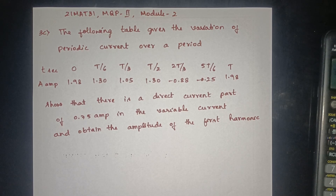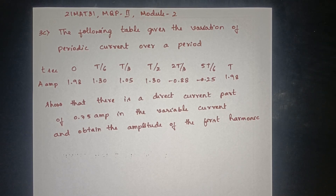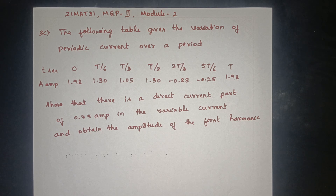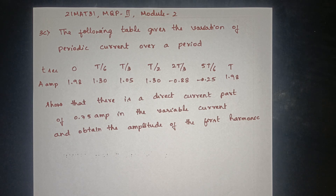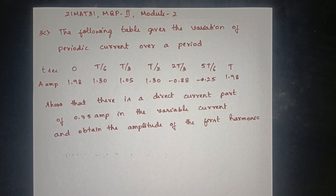Another question. The following table gives the variation of periodic current over a period T. The values are at T=0, T/6, T/3, T/2, 2T/3, 5T/6, T giving current values 1.98, 1.30, 1.05, 1.30, 0.88, 0.25, 1.00. Show that there is a direct current part of 0.75A in the variable current and obtain the amplitude of the first harmonic.